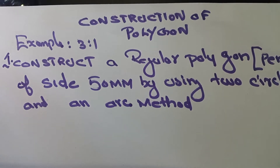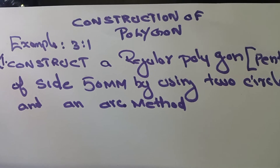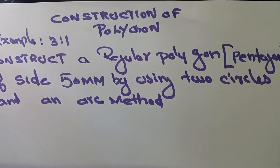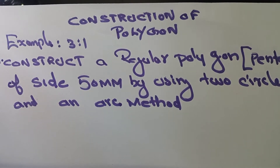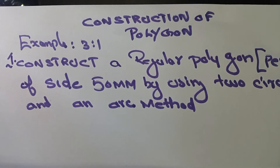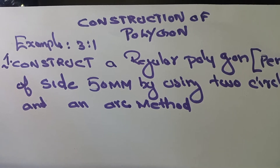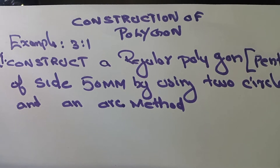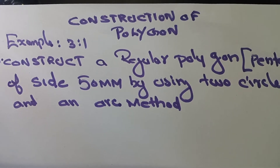Dear students, in this class we have to discuss how to construct a regular pentagon having side 50mm by using two circle and arc method. This is our today's problem. In chapter 3, example 3.1, we discuss such a type of problem.